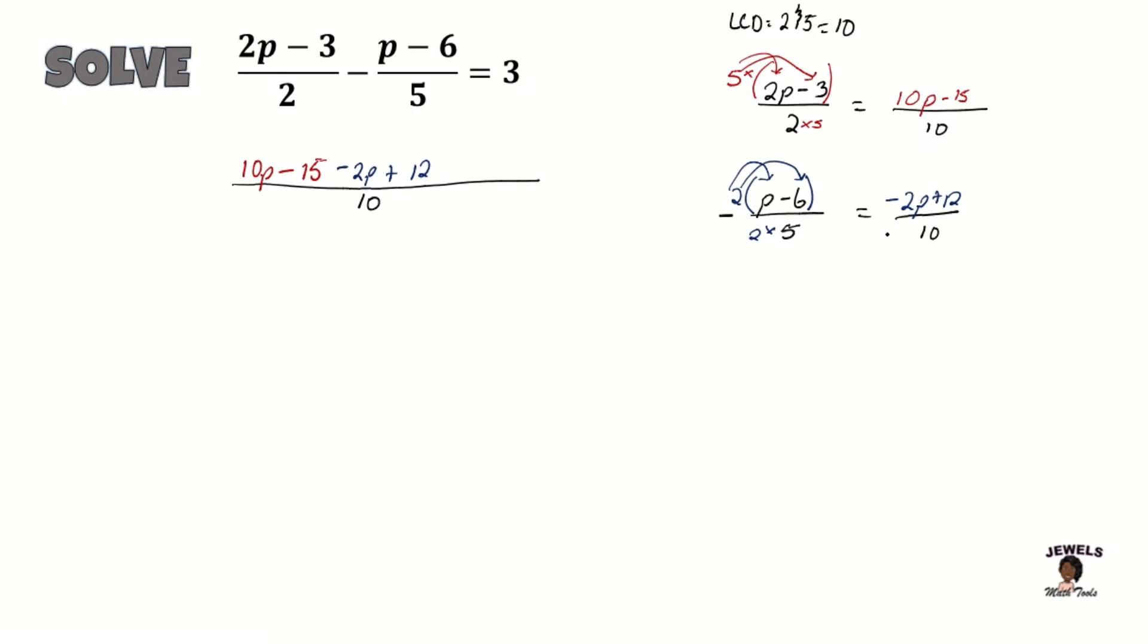And for our last term, which is our 3, and remember that our 3 has a denominator of 1 even though we don't write it in. So we know that 1 times 10 is equal to 10. So 10 times 3 will equal 30. So our equation is equal to 30. And now that we have everything changed to its equivalent form where 10 is its denominator, we're now going to remove our denominator.